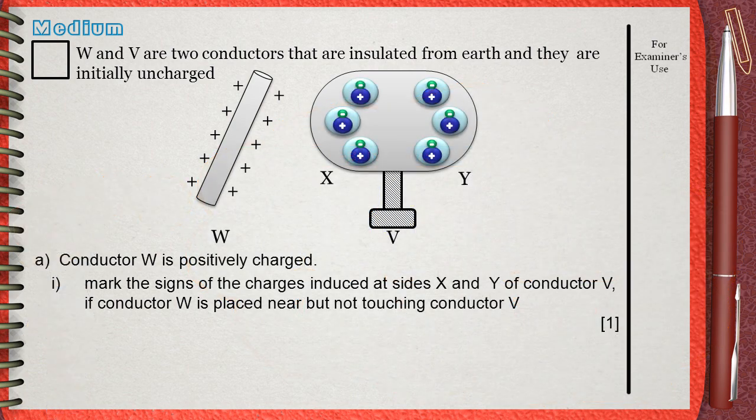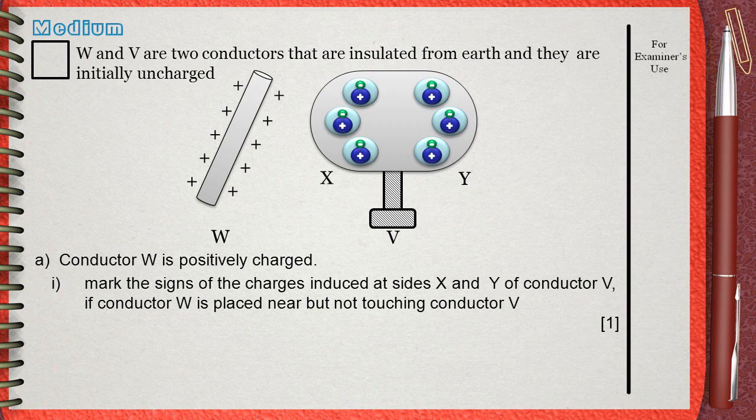Each atom contains positive charges which are protons. In our diagram they are represented by blue spheres. Also each atom contains electrons. They are negatively charged and are represented in the figure by small green spheres with negative signs.